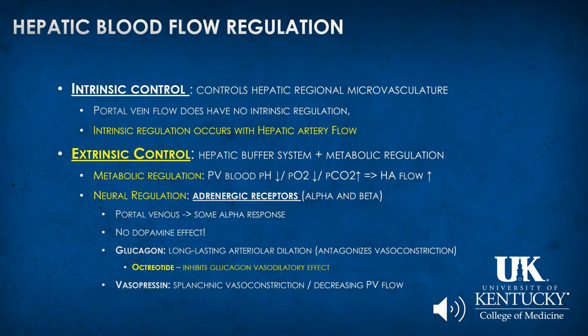The neuronal regulating factors include adrenergic alpha and beta receptors present at the hepatic blood vessels. On portal vein branches, there is some alpha response. Dopamine has no effect on portal venous circulation. Glucagon is a strong stimulant causing long-lasting arterial dilation and antagonizes vasoconstriction. Octreotide can inhibit glucagon's vasodilatory effect, which is why it is a treatment for portal hypertension. Vasopressin causes splanchnic vasoconstriction, decreasing portal vein blood flow and thereby increasing hepatic arterial blood flow.